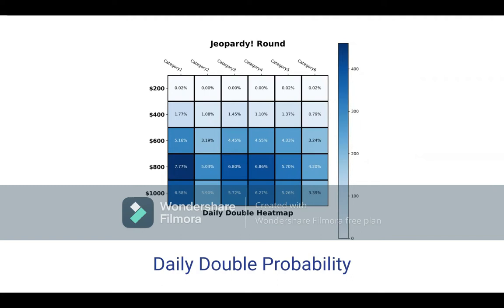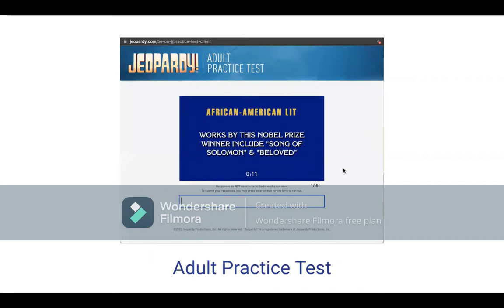This is a screenshot of the practice test for adults, which is what you will have to take if you want to audition for the show. This is a typical example of how the actual online test will go. For example: 'Works by this Nobel Prize winner includes Song of Solomon and Beloved.' For the online test, you don't have to answer in the form of a question like you do on the show. You can just type in the answer, which in this case is Toni Morrison.